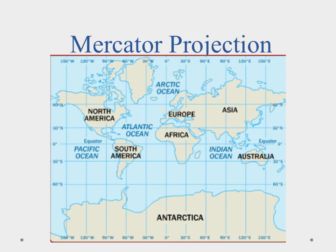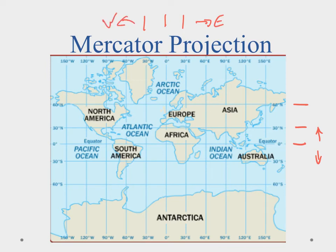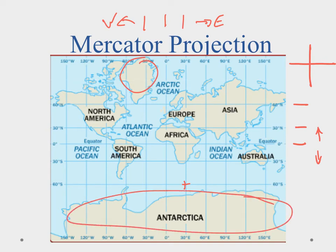One of the first map projections was the Mercator projection, and it's still used a lot today. What makes it useful is that lines of latitude are parallel and lines of longitude are also parallel, measuring how far north/south and east/west. In a Mercator projection, lines of latitude are perpendicular to lines of longitude, giving nice even corners that make it easy to use the global grid. The problem is, the further you get from the equator, the more distortion you see — things like Greenland and Antarctica are blown way out of proportion in size.